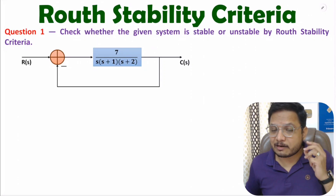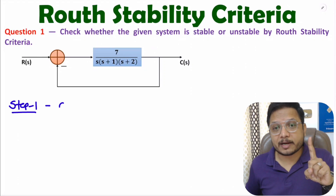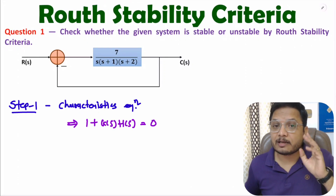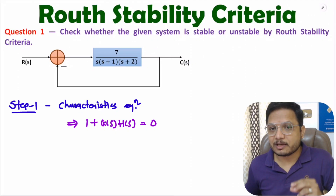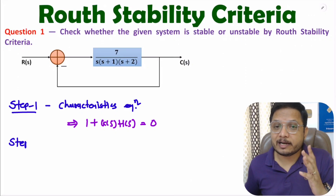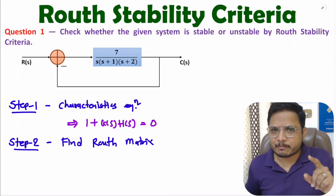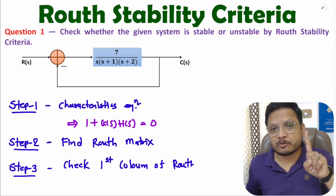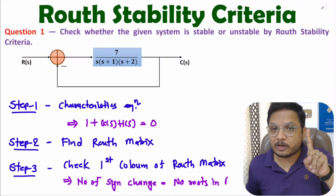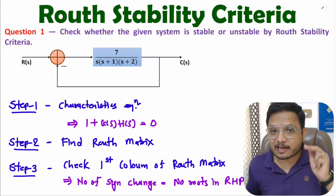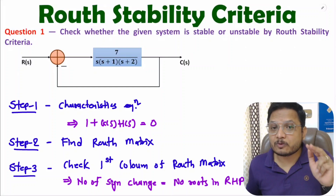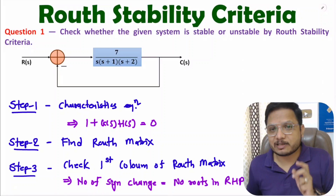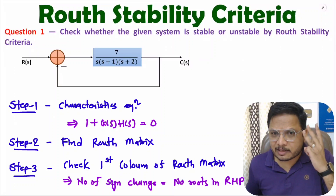There are three steps that we need to follow. In the first step, we need to identify the characteristic equation of the system. The characteristic equation is 1 plus G(s)H(s) equals 0. In the second step, we need to identify the Routh matrix. In the third step, we need to check the first column of the Routh matrix — we observe how many sign changes are there. The number of sign changes equals the number of roots in the RHP. If no sign change is there, the system will be stable.